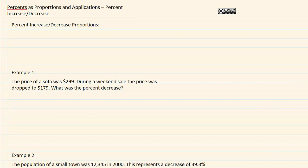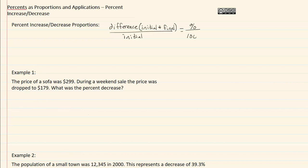When we're solving percent increase or decrease proportions, we want to start off with the difference of our initial and our final amounts all over the initial. This will equal our percent over a hundred.